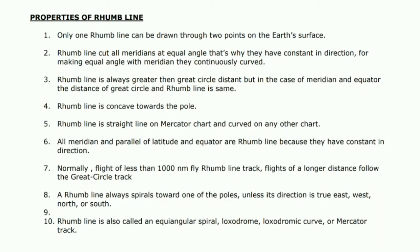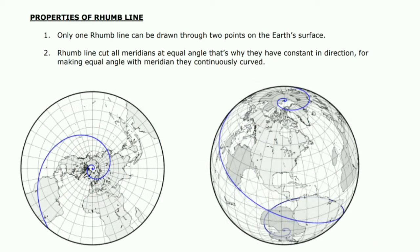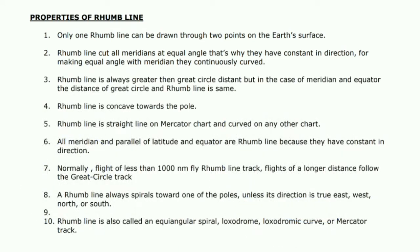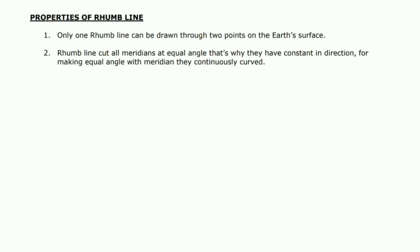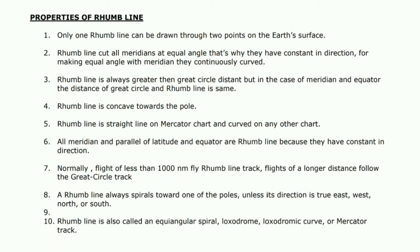So to make an equal angle between the rhumb line and each meridian, the rhumb line always curves so it will cut all meridians at an equal angle. It is constant in direction, meaning if an aircraft is flying at heading 000, then both the initial and final heading will be 000. Number three — rhumb line distance is always greater than great circle distance.